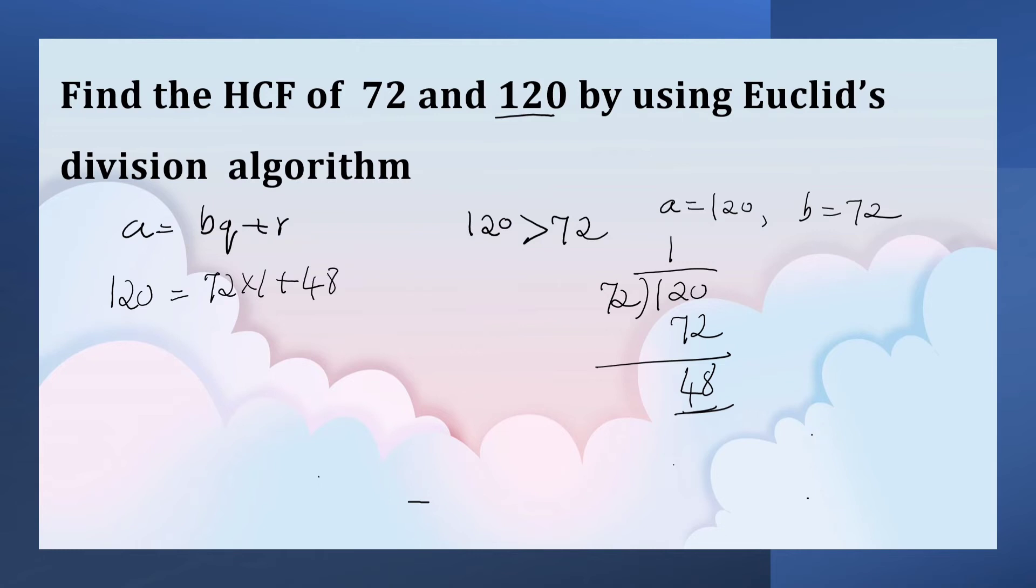Now let us apply division algorithm for 72 and 48. So 72 is equal to 48 into 1 plus 24.